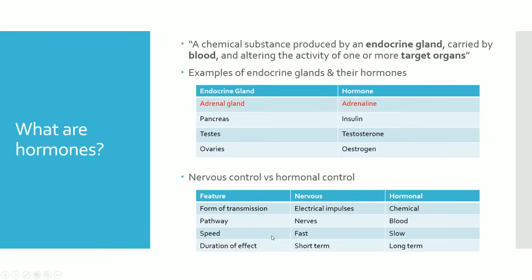In terms of speed, the nervous system has much faster transmission compared to the hormonal system. However, in terms of duration of effect, the nervous system only has a short-term effect whereas the hormonal system has a fairly long duration of effect. So these four main things are what you can compare between the two systems.